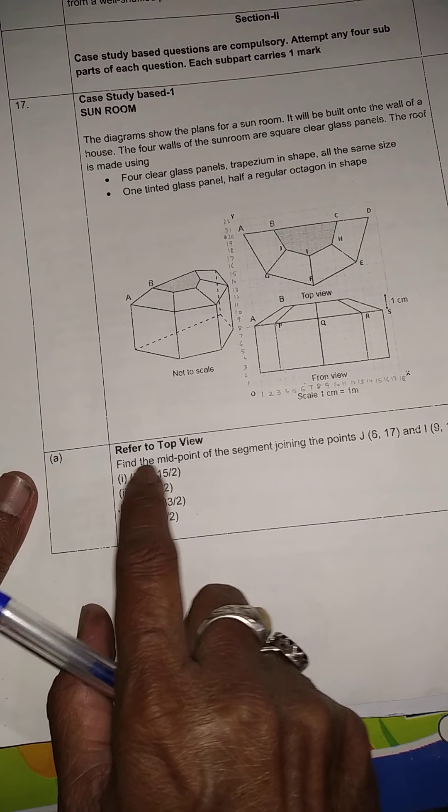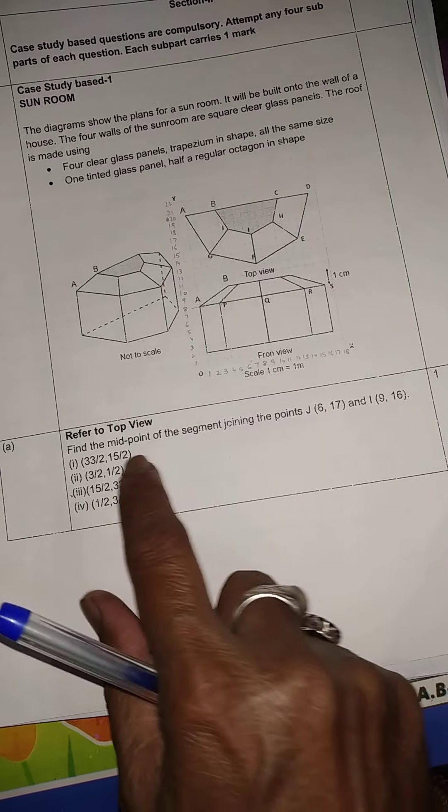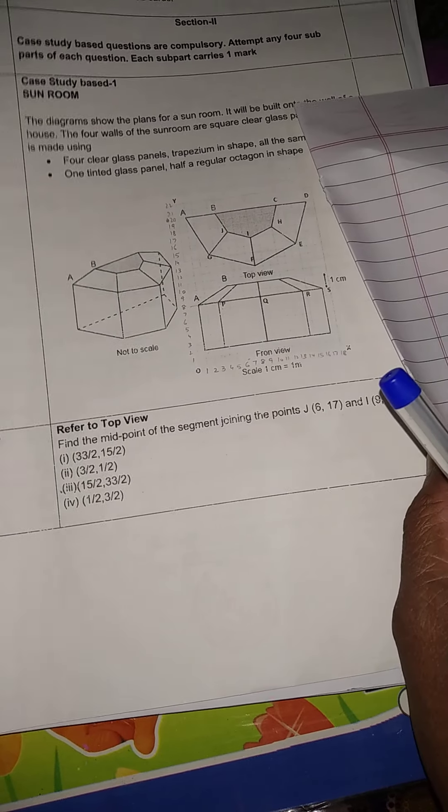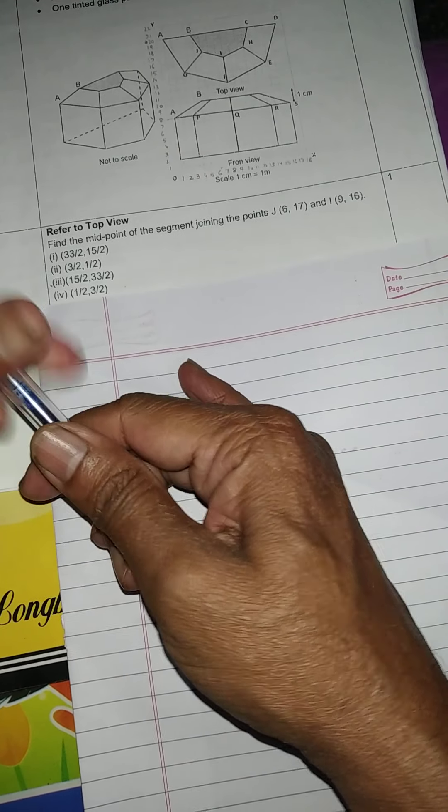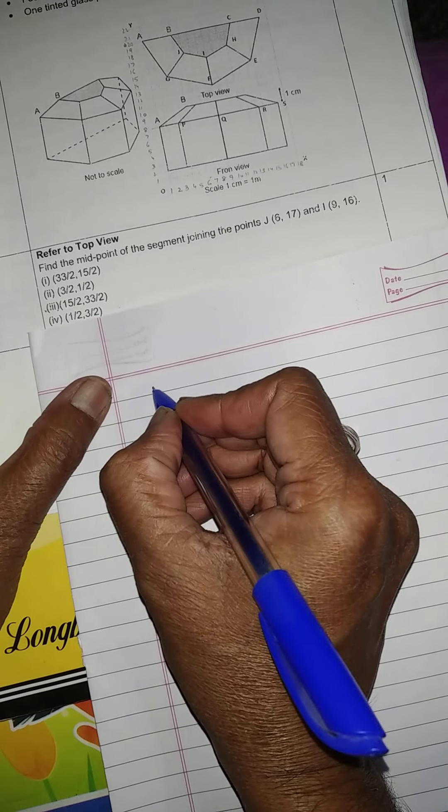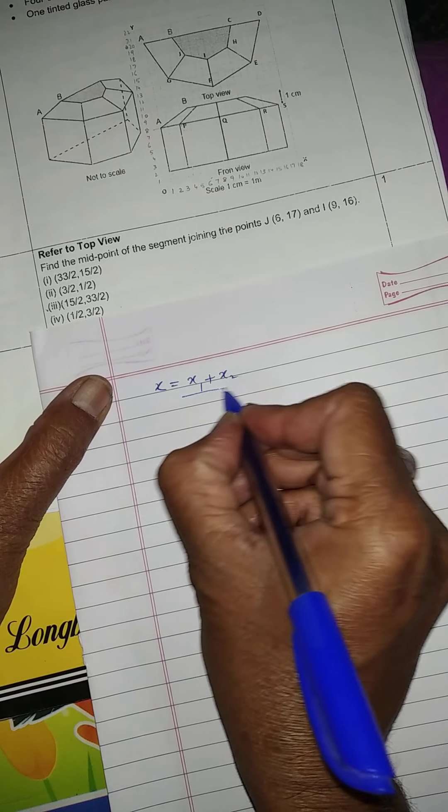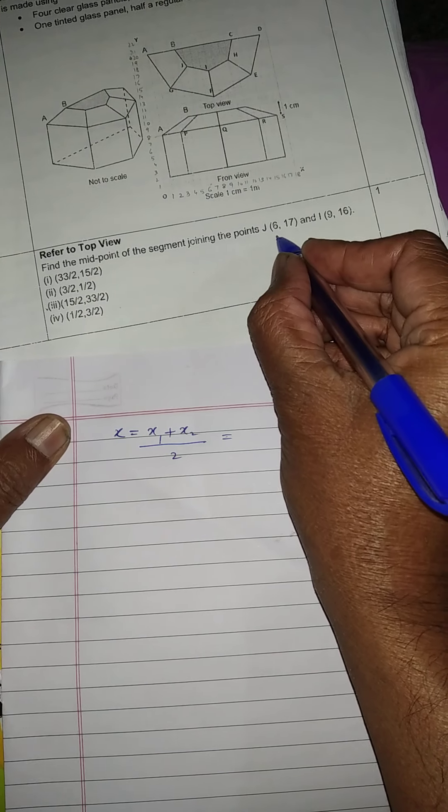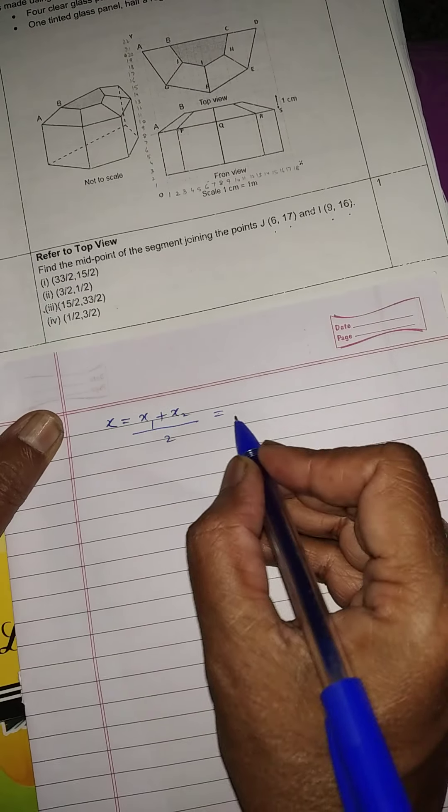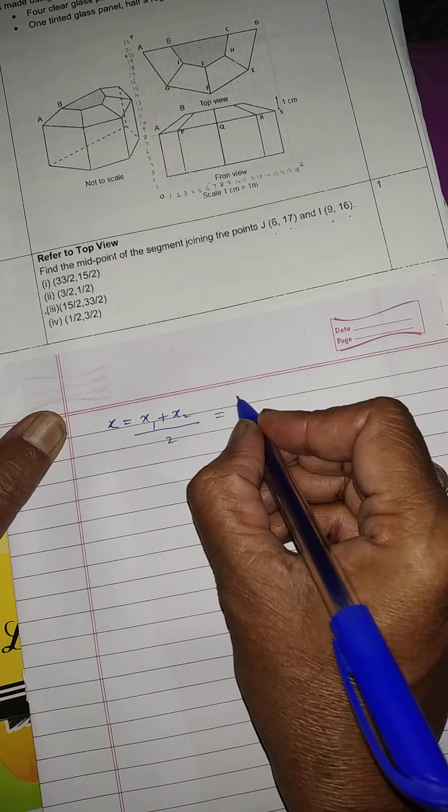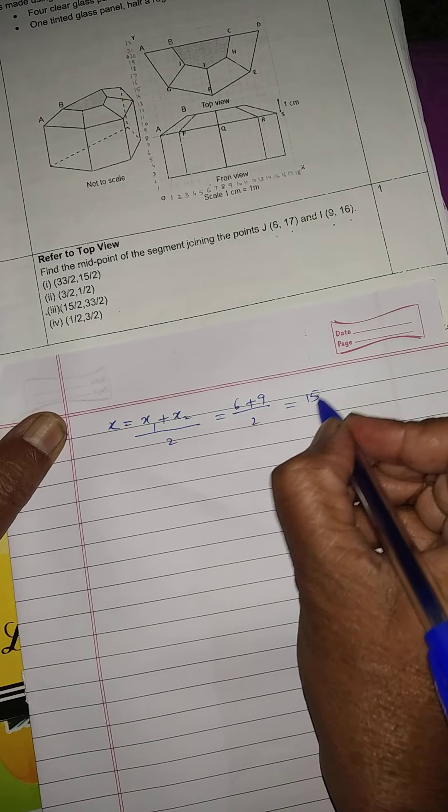Here in part A he is asking, find the midpoint of the segment joining the points these two points and four options they have given. We want to find the midpoint. Here we will have to use midpoint formula. Midpoint formula states that x is equal to x1 plus x2 upon 2. Here what is x1? This is x1, this is y1. Similarly, this is x2 that is y2. According to this formula we will put the values 6 plus 9 upon 2, that will be equal to 15 upon 2.